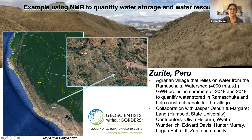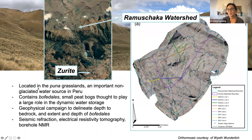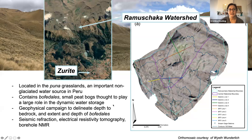This is a picture of Zurite and the watershed above it, with an aerial image of the watershed as well. You can see different terrain across this region. The grayish-purplish area is the Puna grasslands — an important non-glaciated water source in Peru. As glacial water decreases due to climate change, the Puna grasslands will become an even more important water source. Also within this region are bofedales — small peat bogs thought to play a large role in the dynamic water storage of this region.